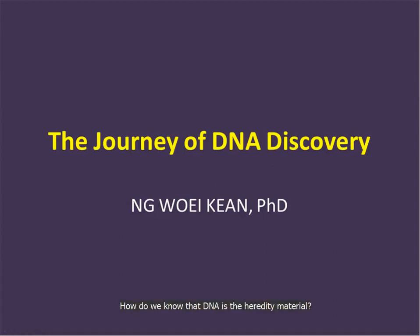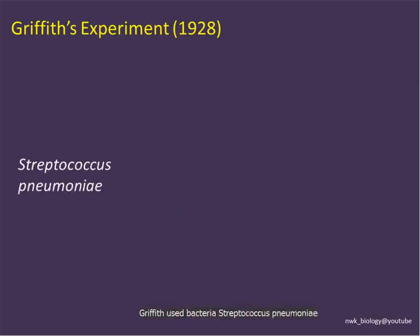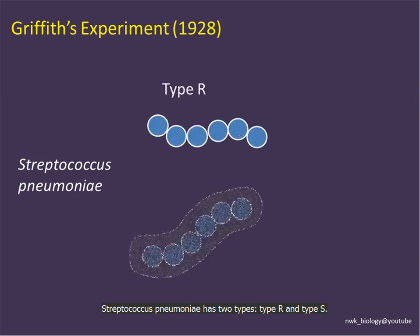How do we know that DNA is the hereditary material? It started with the experiment of Griffith in 1928. Griffith used bacteria Streptococcus pneumoniae, which has two types: type R bacteria and type S bacteria.